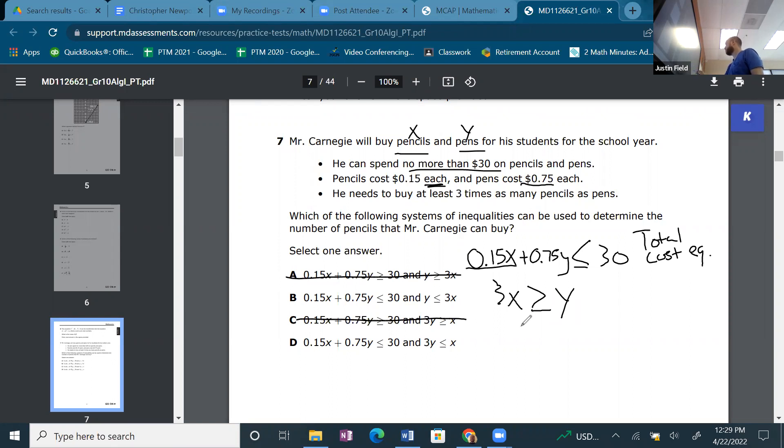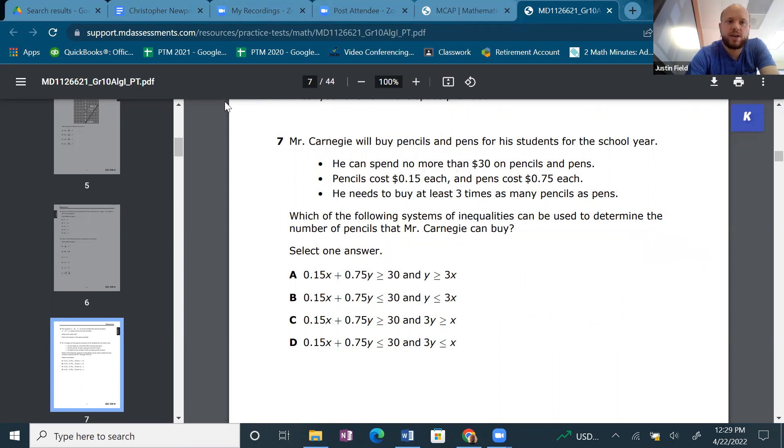Alright, and then we want the... so it's going to be y is less than or equal to 3x. They're really trying to trick this one, right? So if we started with that when we're thinking about it, but we could just flip it around. But when you flip it around, you have to flip that inequality sign too. Okay, alright.